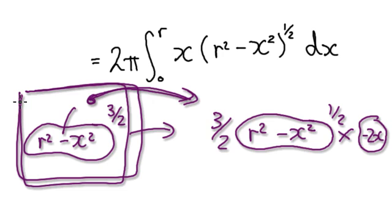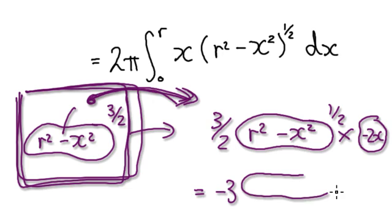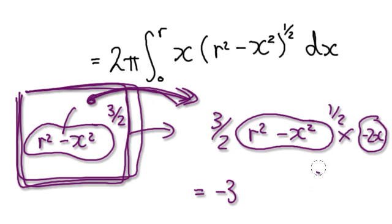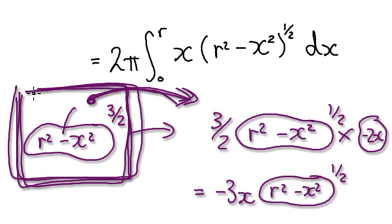Let's tidy this up. If you make this to be your initial guess and differentiate it, it will give you this. The 2 here will cancel out with this 2, so that will give you minus 3 and then the bubble itself. Moving the whole bubble over, that would be minus 3x because of this x here, and then the bubble itself: (r² minus x²) to the half.